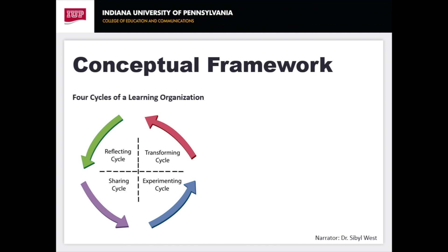The experimentation cycle builds on the work of the reflection and sharing cycles. The goal in this cycle is to move from individual and small group efforts to developing new or experimental programs, strategies, tools, and initiatives to enhance diversity efforts throughout the college. Finally, the transformation cycle's goal is to realign policies and practices that reflect a transformation in thinking. This cycle involves adopting policies and best practices that affect change in the structure and operation of the college.